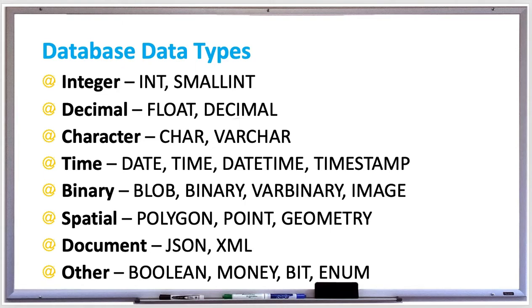There's spatial data, which is geometric information such as lines, polygons, or even map coordinates. The data types for spatial data include polygon, point, and geometry. Examples are parentheses 1.7 comma 23.5 if you had some kind of coordinates.